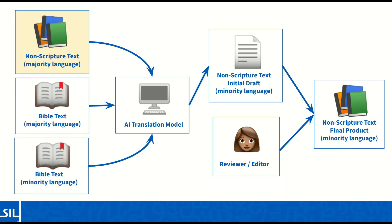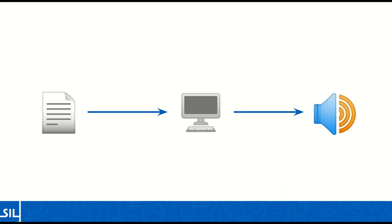These texts can include sermon notes, discipleship tools, trauma healing and trafficking awareness materials, and more. These specialized models can then be used to translate texts from languages of wider communication into minority languages. Along with text-to-text translation, Acts 2 also provides audio services for minority languages, such as text-to-speech and voice conversion, making these cutting-edge technologies available to many communities for the first time.